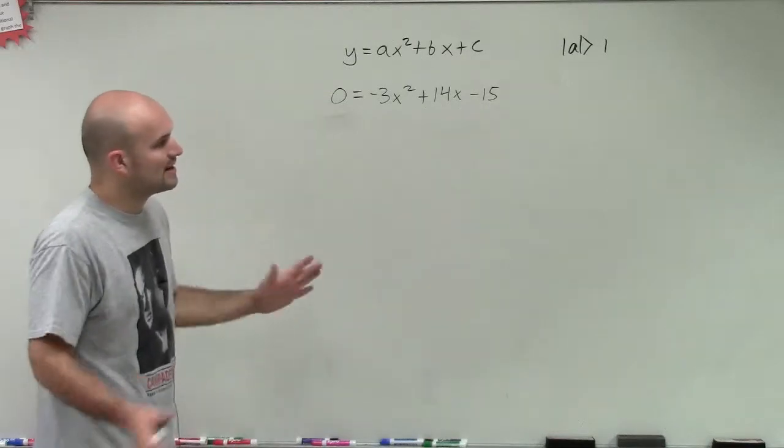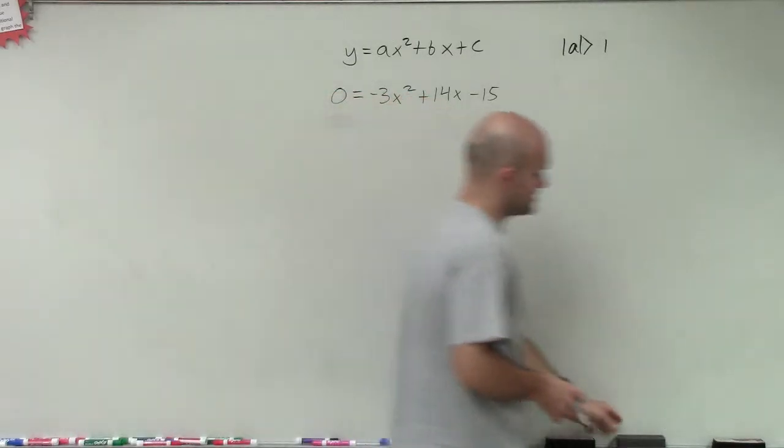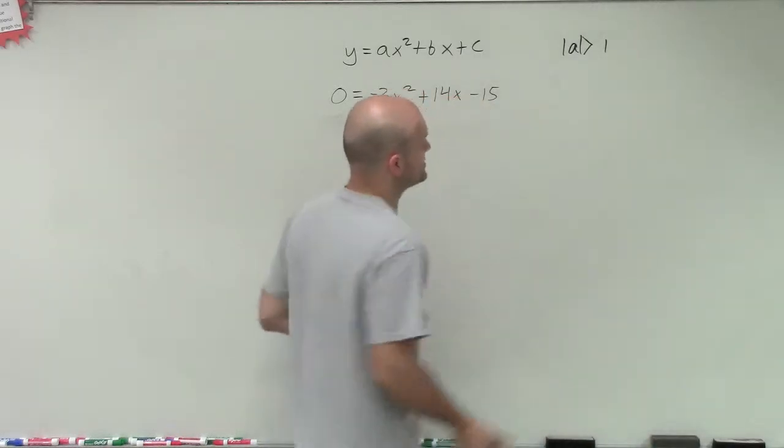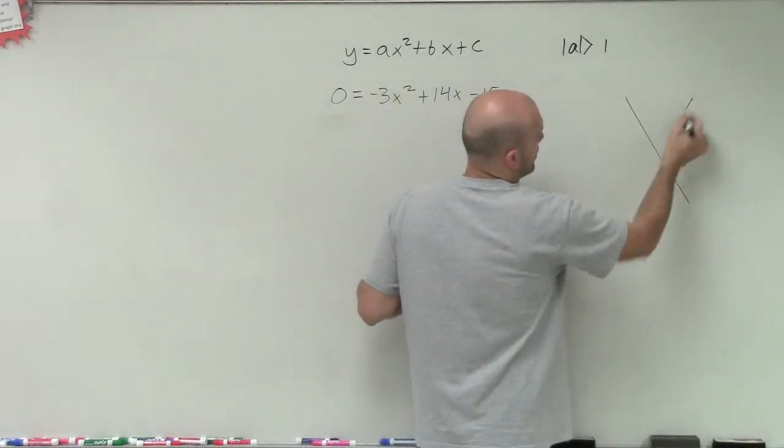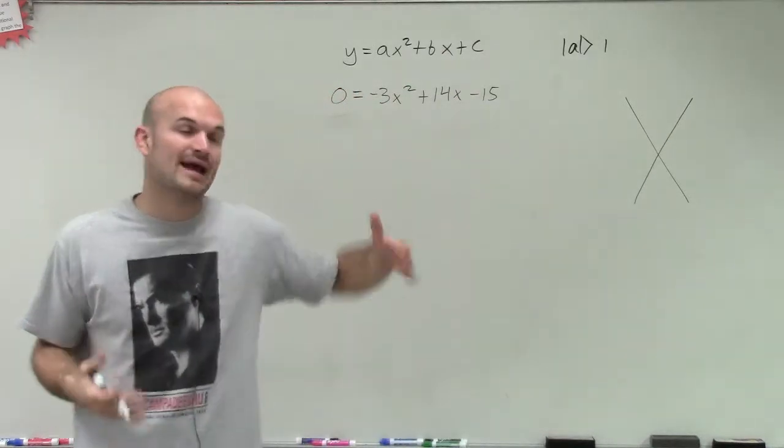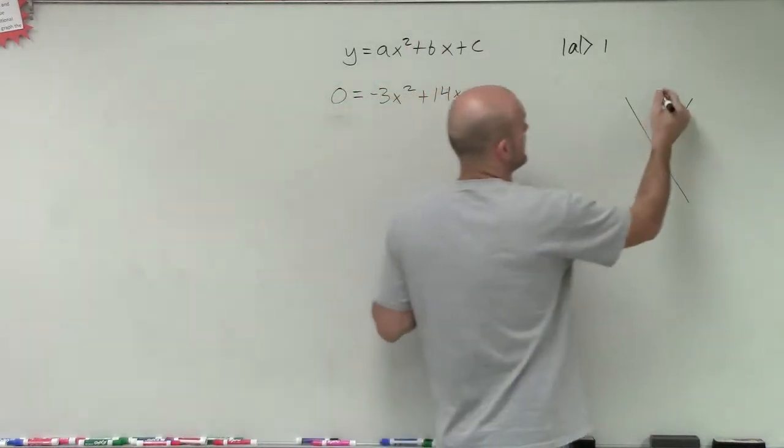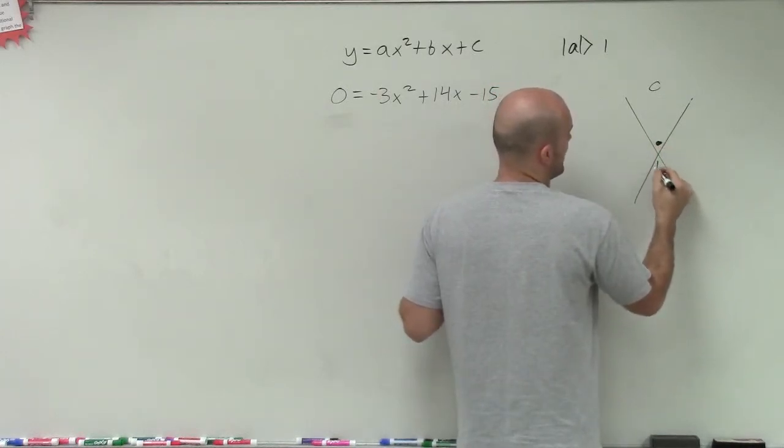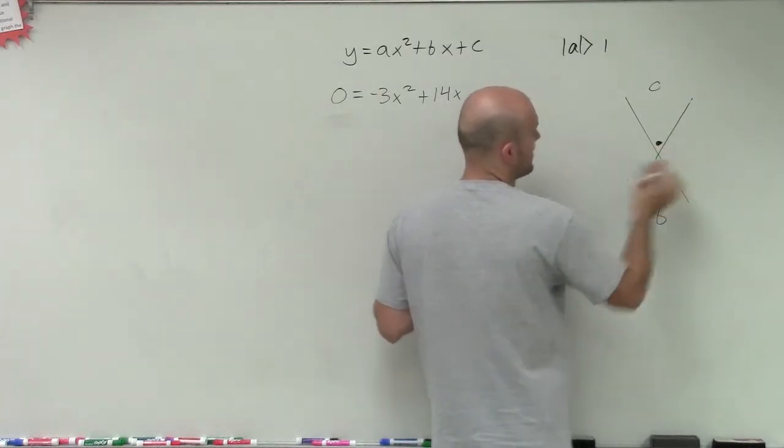OK, so by using the AC method here, this is what we're going to do. First thing we're going to do is we need to create our diamond again. Now, when we had A equal to 1, we had C up top and B on the bottom, right? C up top, B on the bottom, what two numbers multiply to give you C, add to give you B, and then we had our two factors, P and Q.